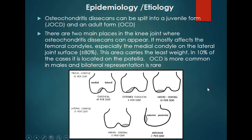The etiology can be divided mainly into two types: juvenile and adult. The two main places in the knee joint where it can appear are the femoral condyle, especially the medial condyle where maximum joint forces act, compared to the lateral condyle. In 10% of cases it is also located in the patella. It is more common in males than females, and sometimes both knees are affected bilaterally.